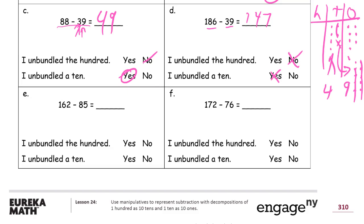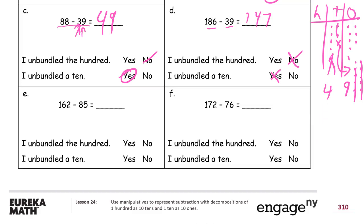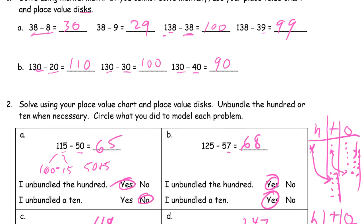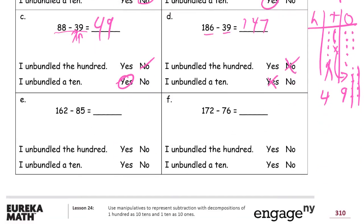162 minus 85 — that's going to be harder to work with, using some tricks from the top of the page where if we're subtracting tens and then a little bit more, we should have a little bit less left. Let me draw the HTO chart: 162 is one 100, six tens, and 2 ones.